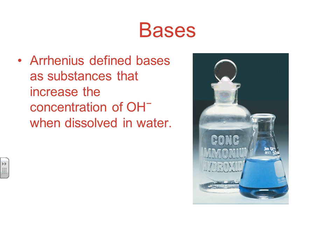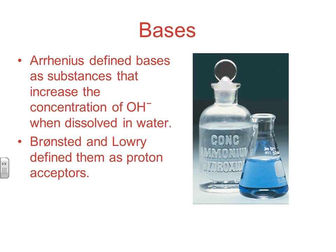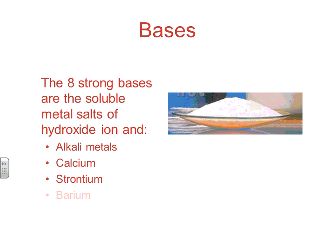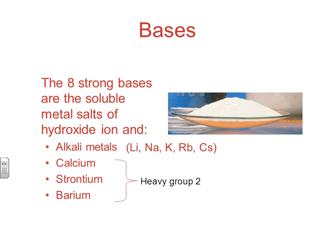For bases, Arrhenius defined them as substances that increase the concentration of OH− in water — if it has ionizable hydroxide, it's an Arrhenius base. Bronsted-Lowry defined bases as proton acceptors: when you accept an H+, you are acting as a base. Whatever accepts the proton is the Bronsted-Lowry base; whatever donates it was the Bronsted-Lowry acid. There are eight strong bases, and you have to memorize them: the alkali metal hydroxides, as well as the heavy group 2 hydroxides — think of the mnemonic CBS, or just think of it as heavy group 2. You need to know these because whether a base is strong or weak matters greatly to how it behaves. This will be on the test over Chapter 4.